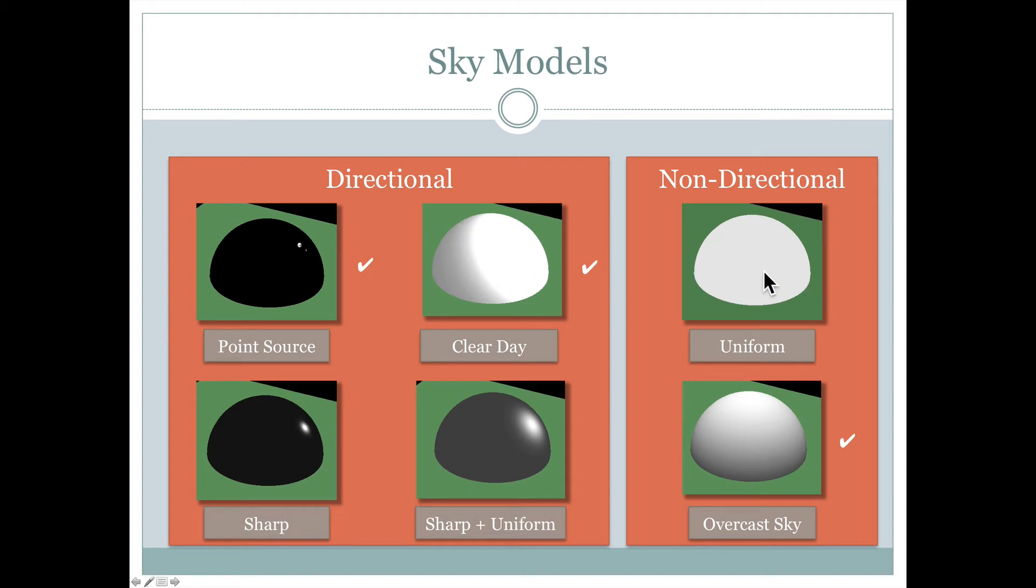We could also do a uniform. The entire sky is super bright. Or we could do this overcast sky model where the brightest part of the sky is right directly overhead and then it gets darker and darker as we move down towards the horizon. We'll look at some examples of point source, clear day, and overcast in the next couple of slides.